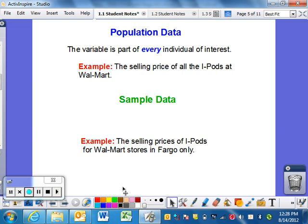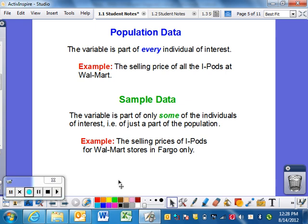Sample is a little different - it's only some of the individuals of interest, a part of the population. In this class, getting a population is very difficult, so we're going to be talking about getting samples quite a bit. An example would be selling prices of iPods for Walmart stores in only Fargo, not anywhere else.